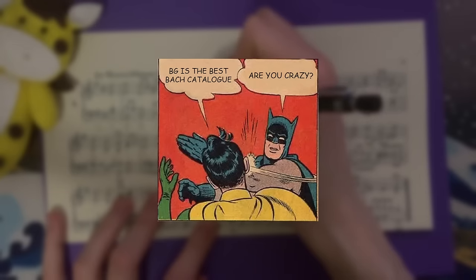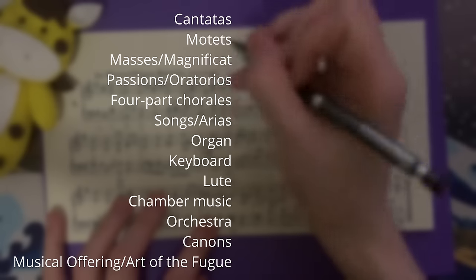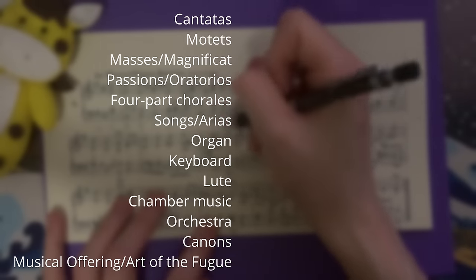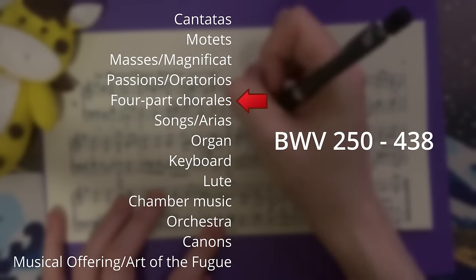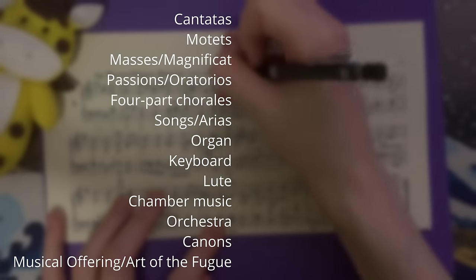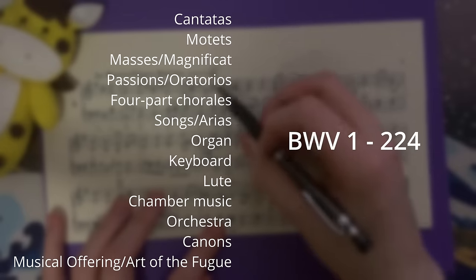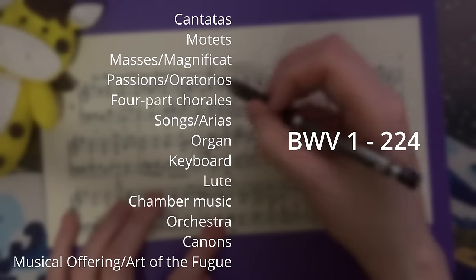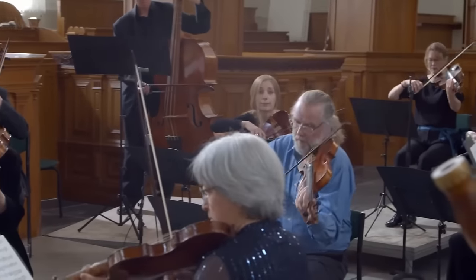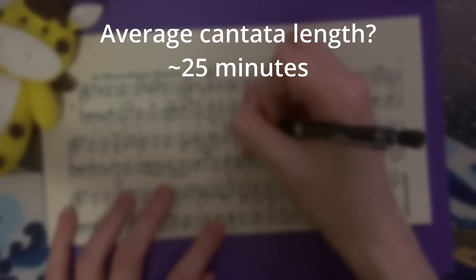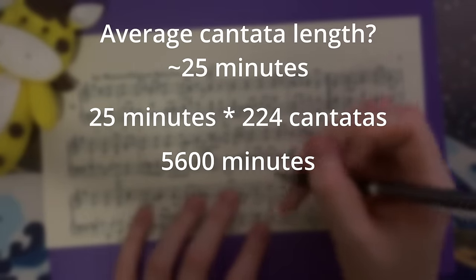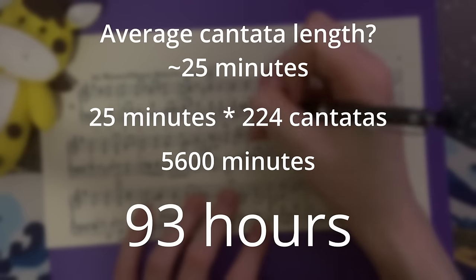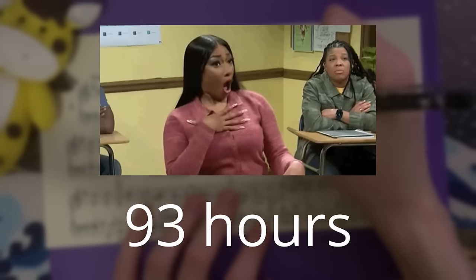The BWV catalog is mostly complete, and handily separates his music into discrete sections. Some sections consist of relatively short pieces — for instance, BWV 250 to 438 consists of Bach's standalone four-part chorales. But not all of Bach's music is equal in length. BWV 1 to 224 consists of his cantatas, multi-movement vocal and ensemble pieces that could be upwards of 40 minutes long. Estimating conservatively at 25 minutes average per cantata, multiplied by 224 pieces, that's 5,600 minutes — a little over 93 hours — and that's just the first 20% of his surviving work.